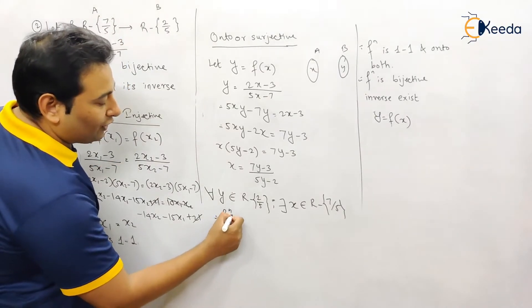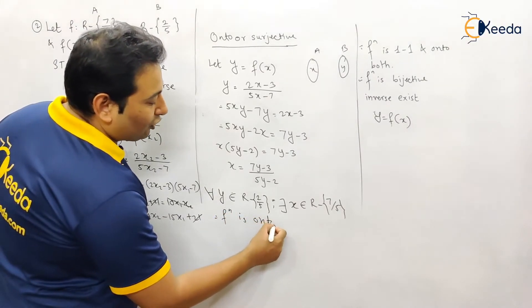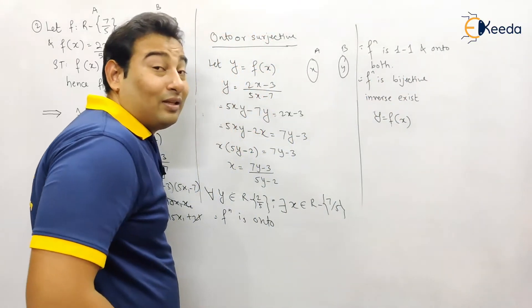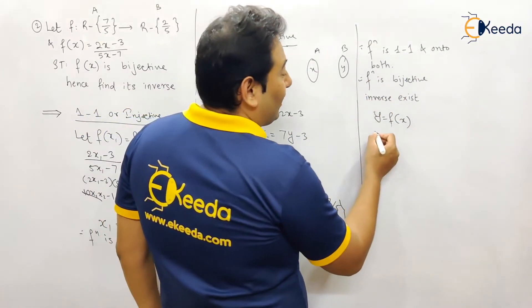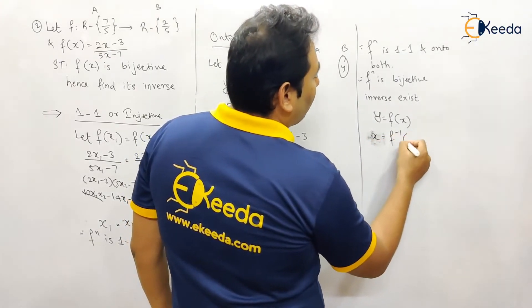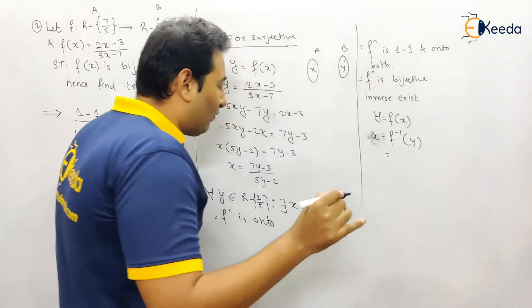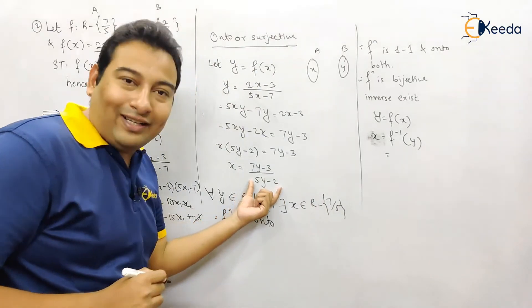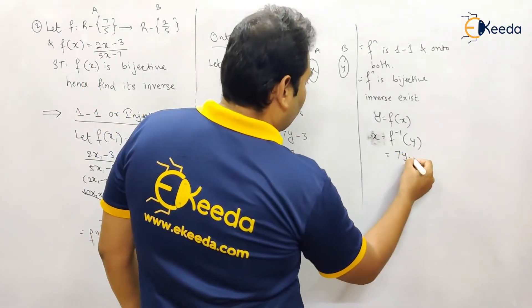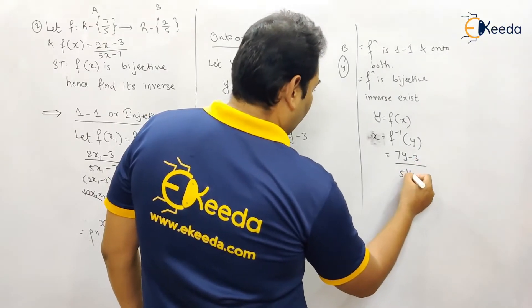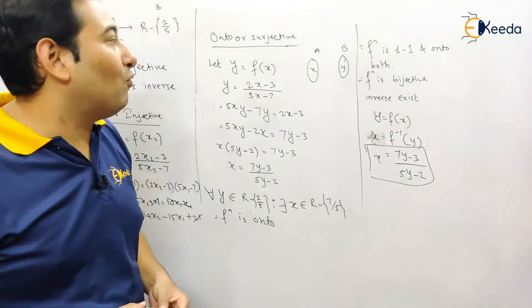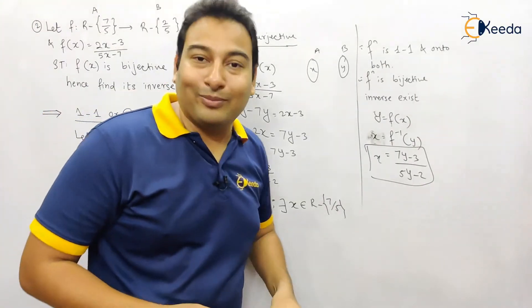Since the function is both one-to-one and onto, it is bijective and therefore its inverse exists. f inverse(y) is simply what we derived: f inverse(y) = (7y minus 3) / (5y minus 2). Very simple — bonus marks in the exam! We are done with the problem. Hope you understood, thank you.